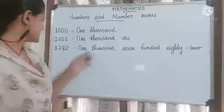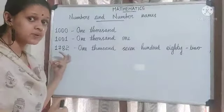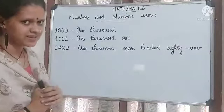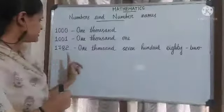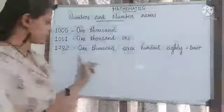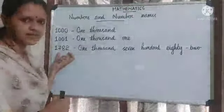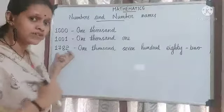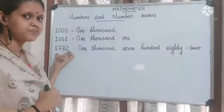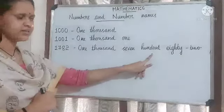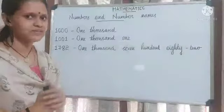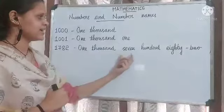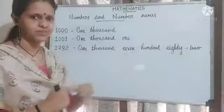Next, let's read this number. Since it is a four-digit number, we have to read from the thousands place. Start with 1,000. Then there comes another three-digit number — you all know how to read three-digit numbers. The next three digits read as 782. So let's read it together: 1,782.